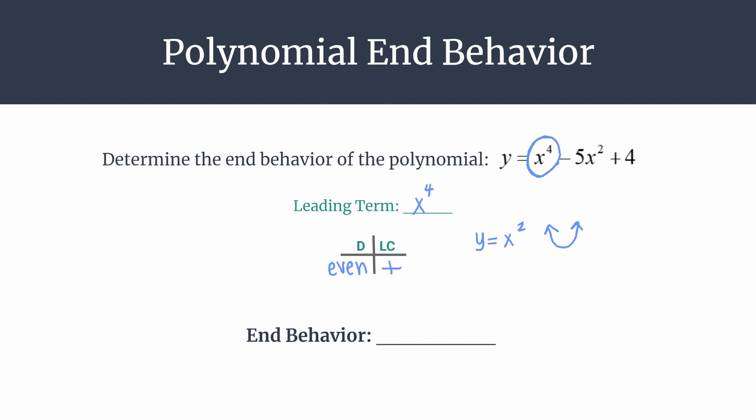All right, so our end behavior, you could call it up on the left and up on the right. That's just saying, what is the graph doing as it goes infinitely negative or infinitely positive in its x's? What are the y's doing? And in short, which direction should the arrows on the ends be facing? So up on both sides here for this polynomial.